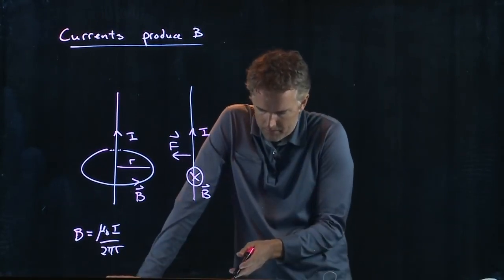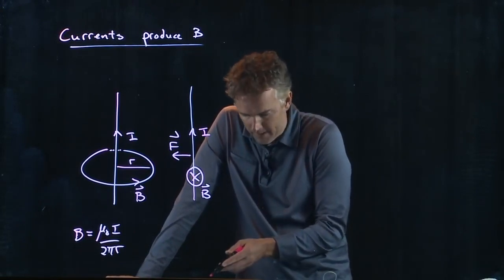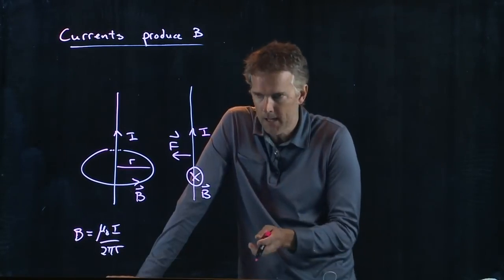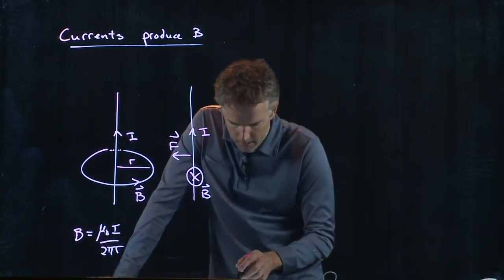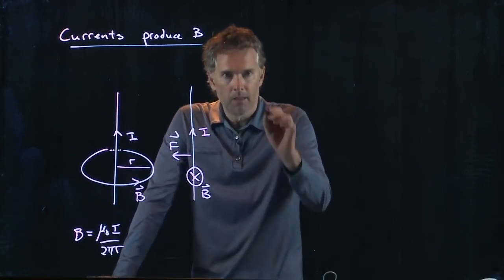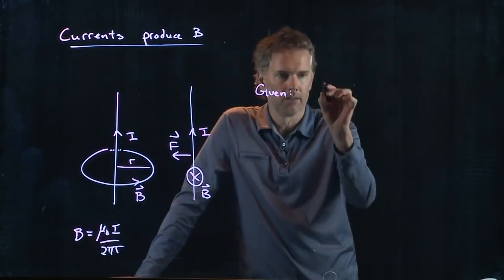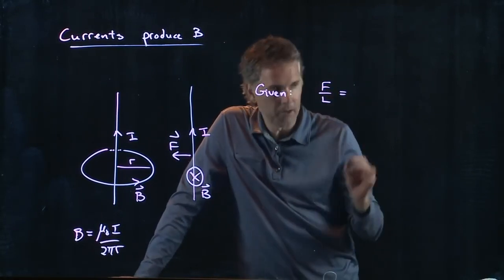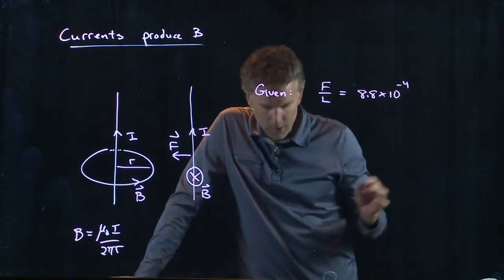And that's exactly what they said in the problem, right? They said an upward current exerts an attractive force on the second wire. And now we need to figure out what the current is in the second wire. And what they tell us in the problem is the following: they give us the force per unit length. Force per unit length is, and we can use my numbers, 8.8 times 10 to the minus 4 newtons per meter.